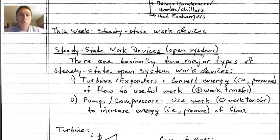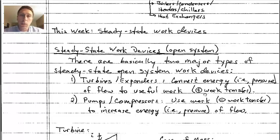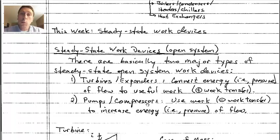Steady-state work devices come in two major types. Turbines and expanders convert energy of the flow — in the form of pressure or mechanical energy — into useful work, so they have positive work transfer from the system to the surroundings. Pumps and compressors use work to increase the energy and pressure of the flow, so work transfers from the surroundings into the system, making it a negative work transfer.